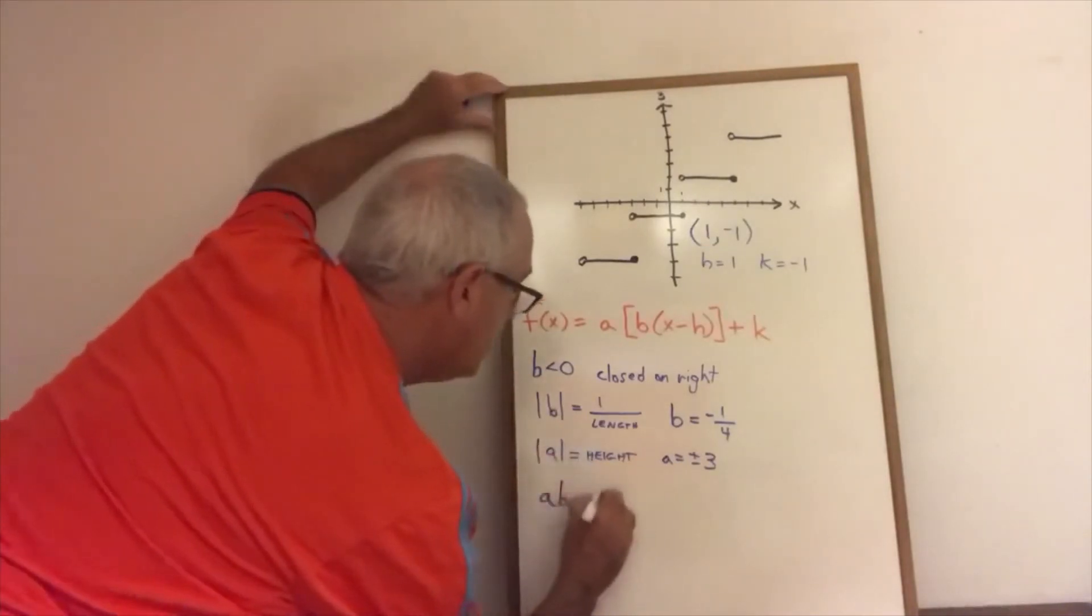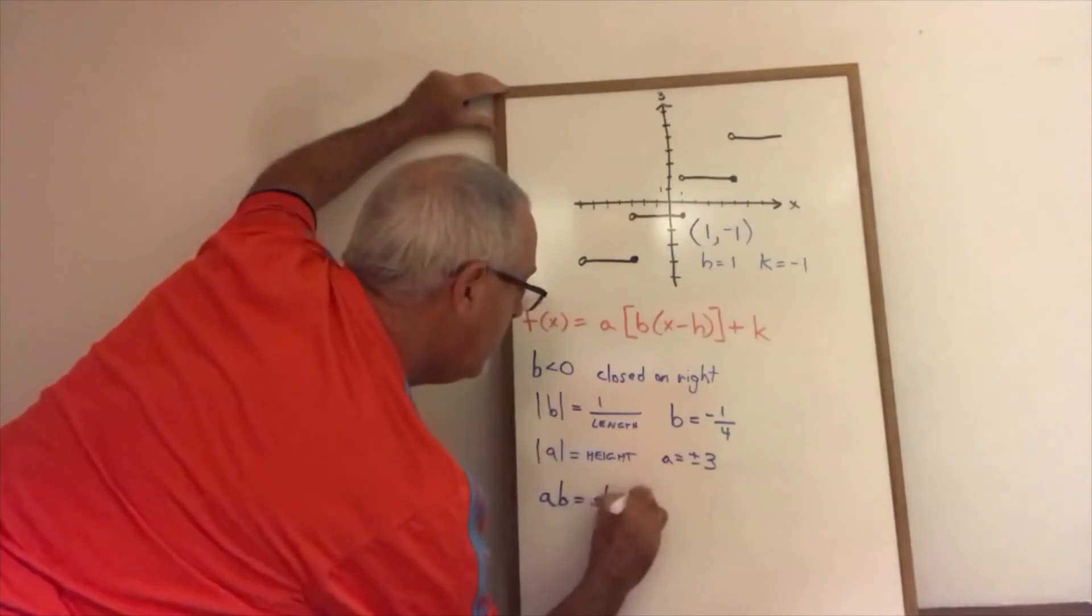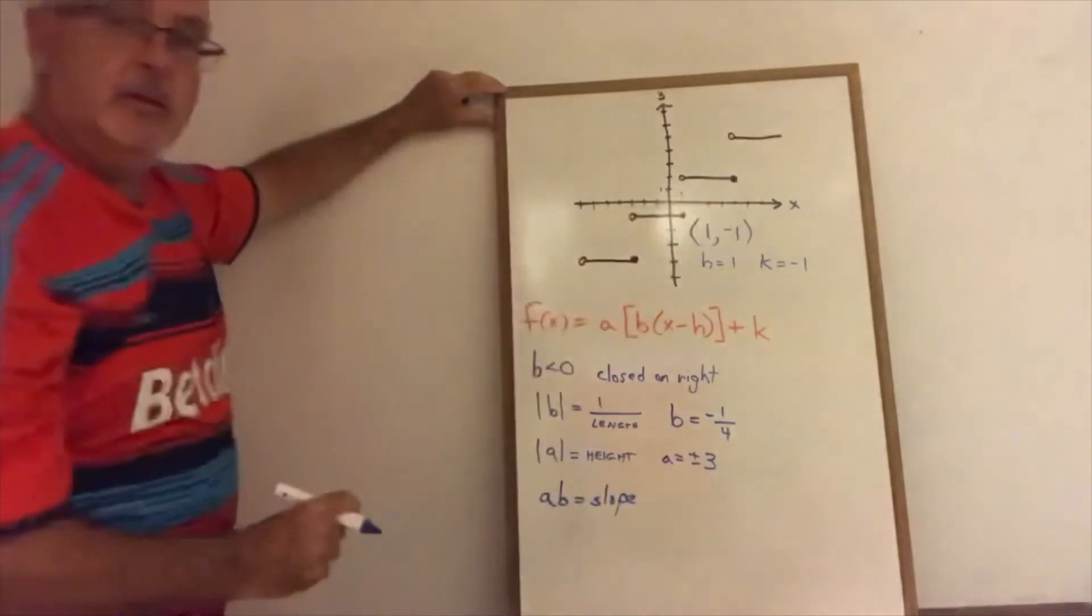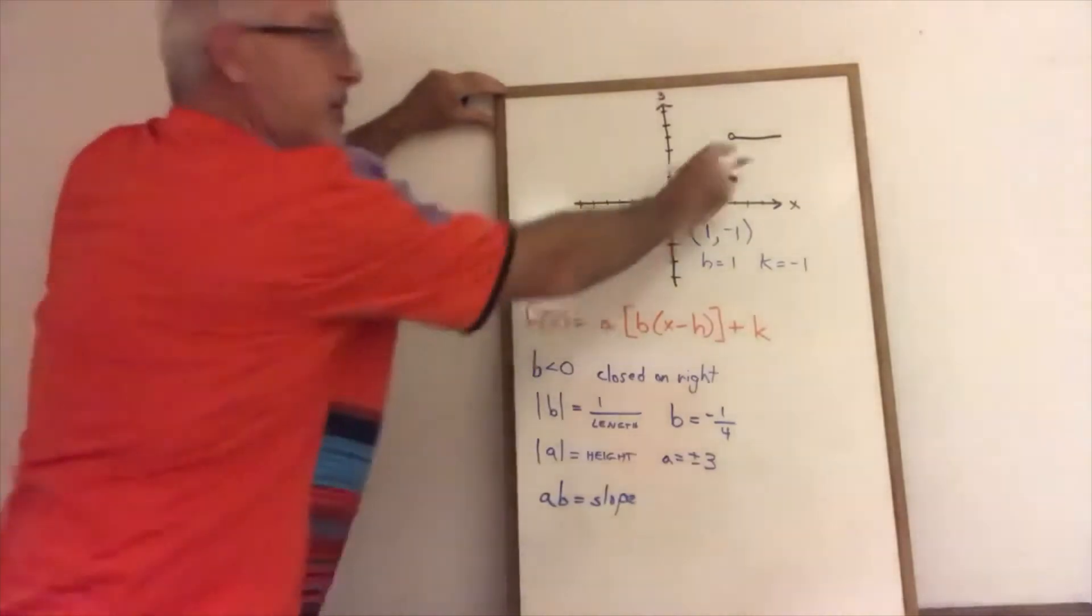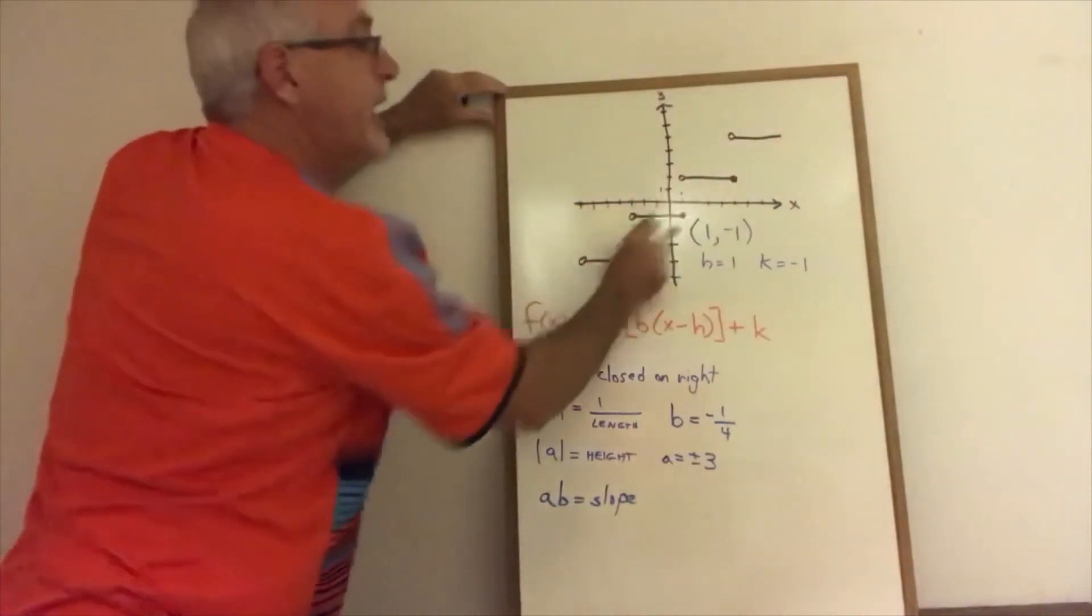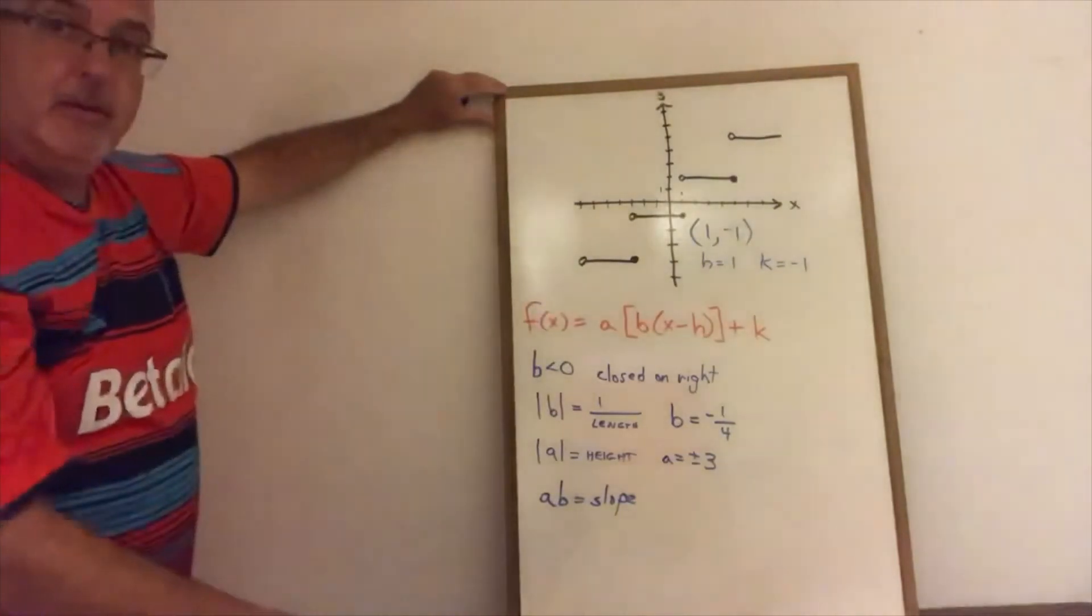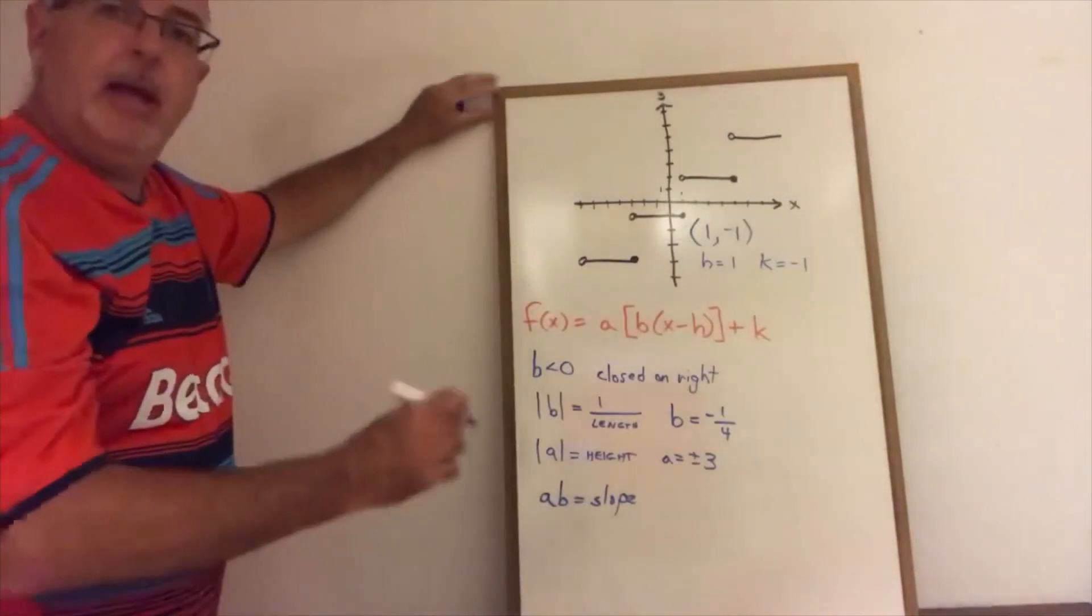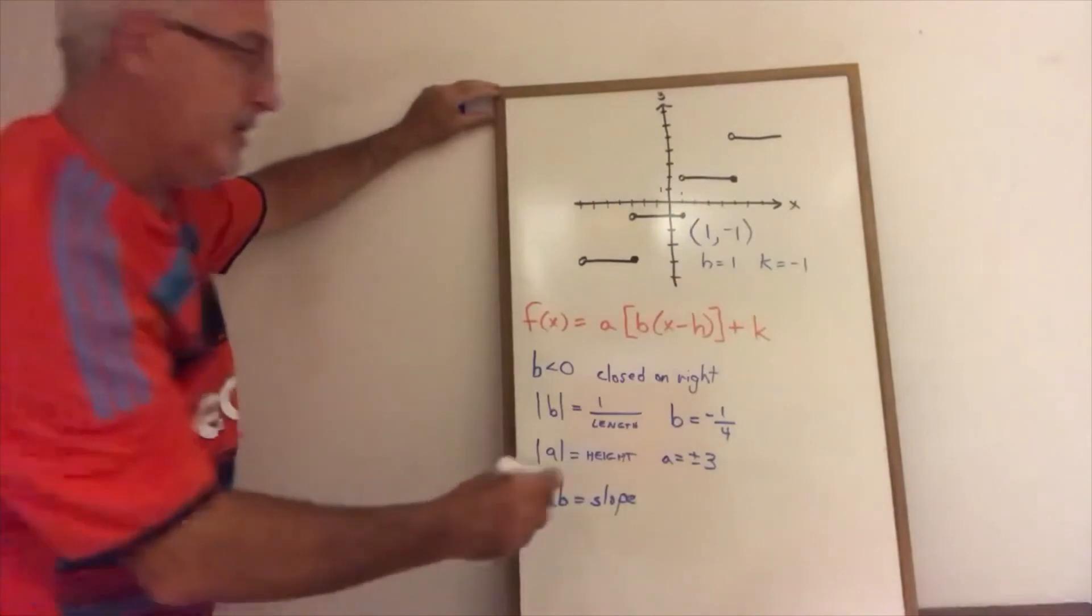AB gives us the slope of that imaginary line that connects all of the closed circles. We have to have a positive slope because we can see in this graph that that imaginary line would have a positive slope. Therefore, AB has to give a positive answer.